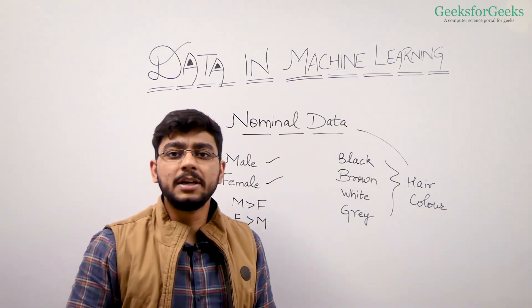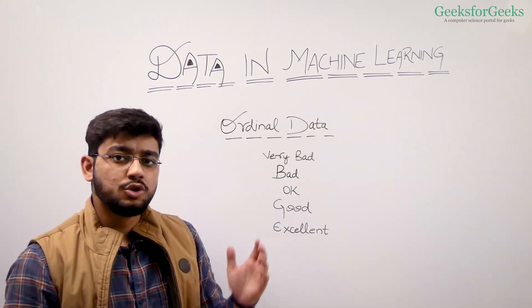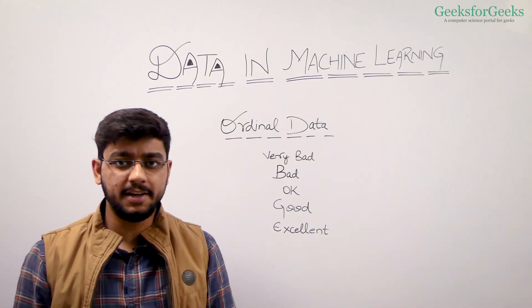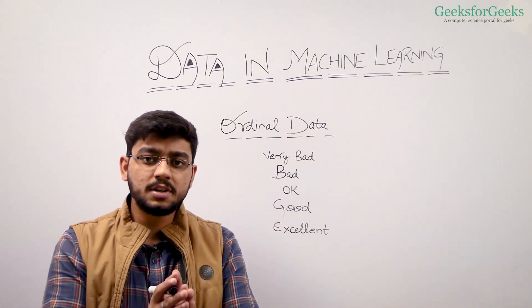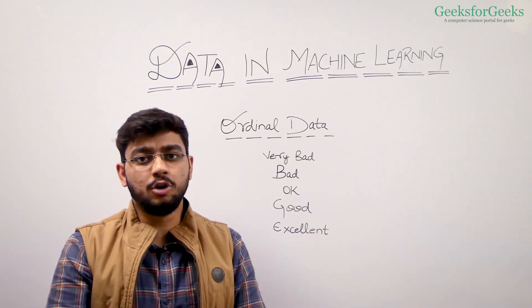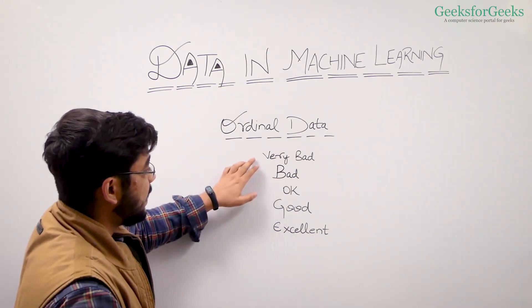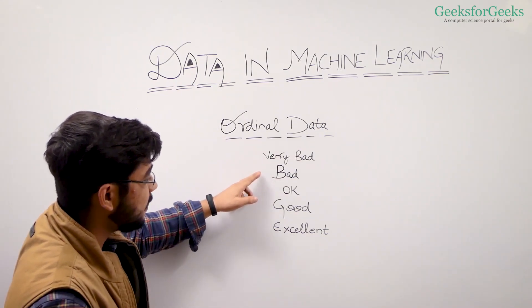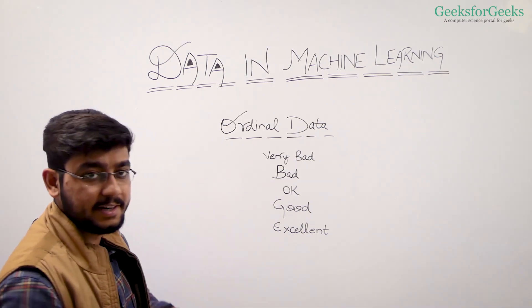Now we'll be talking about ordinal data, the second type of categorical data. This data has discrete values but with a natural ordering. So we have very bad, bad, okay, good, excellent.